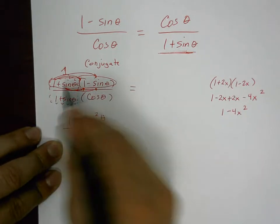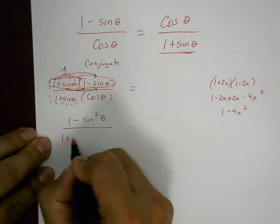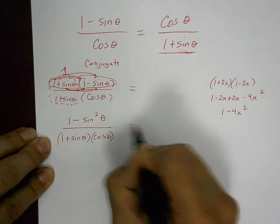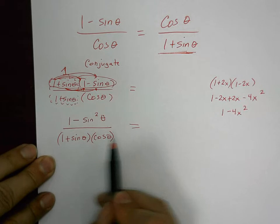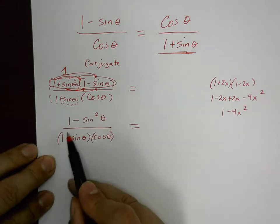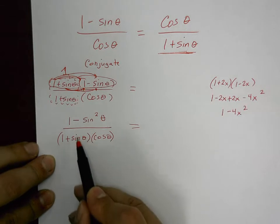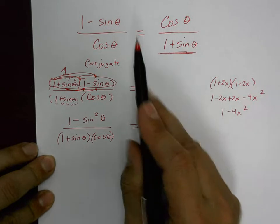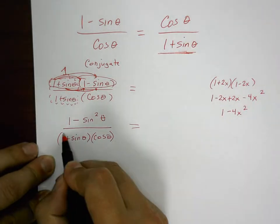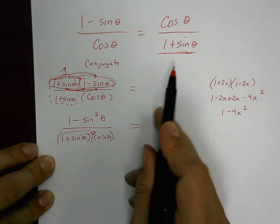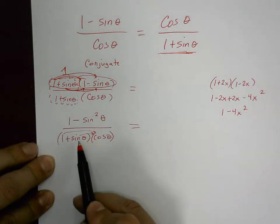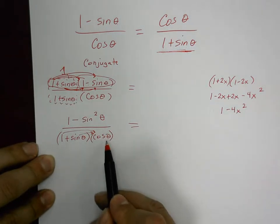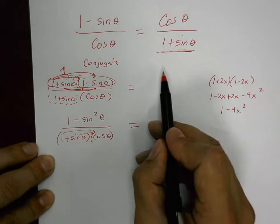In the denominator you have a factor of one plus sine of theta and a factor of cosine of theta. Students often ask whether to distribute and multiply these together using cosine plus sine times cosine, but look at your finished product — it makes no sense to distribute right now. More than likely, this cosine of theta is going to cancel out and you'll just have one plus sine of theta in the denominator.